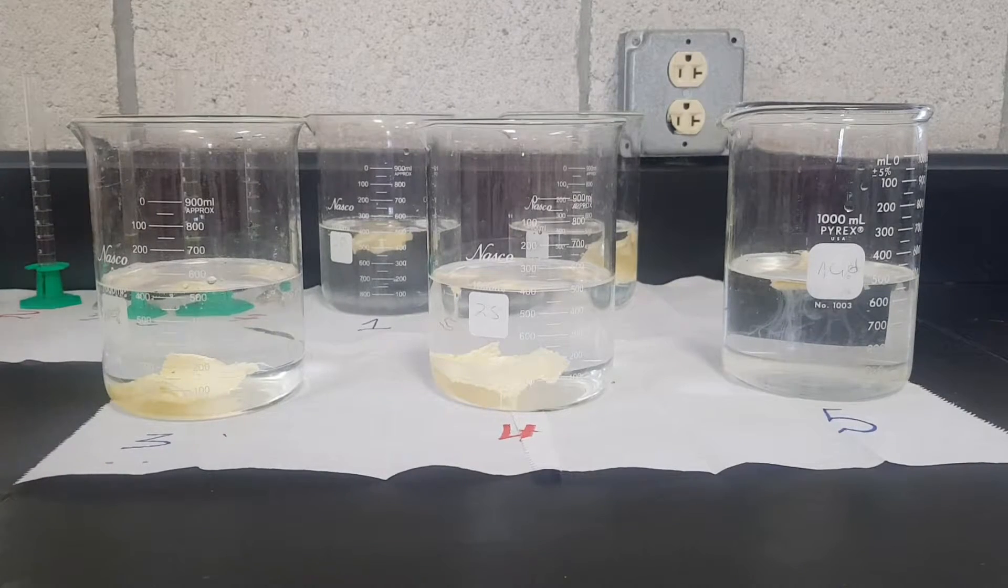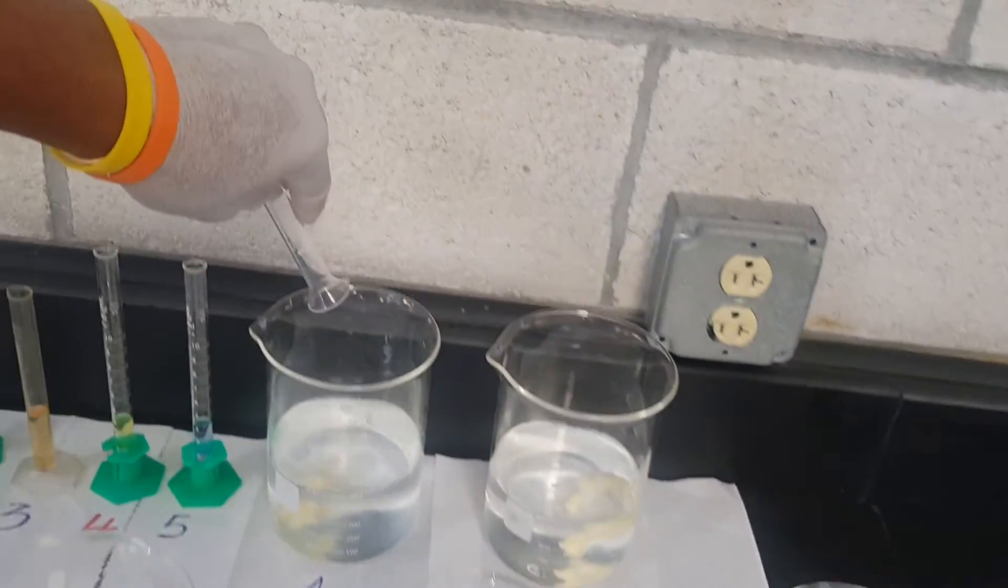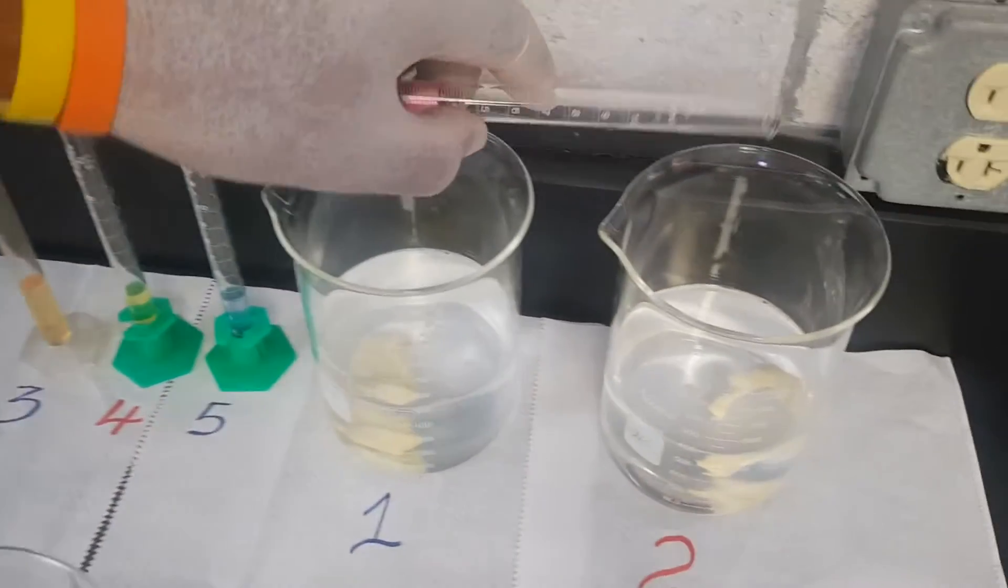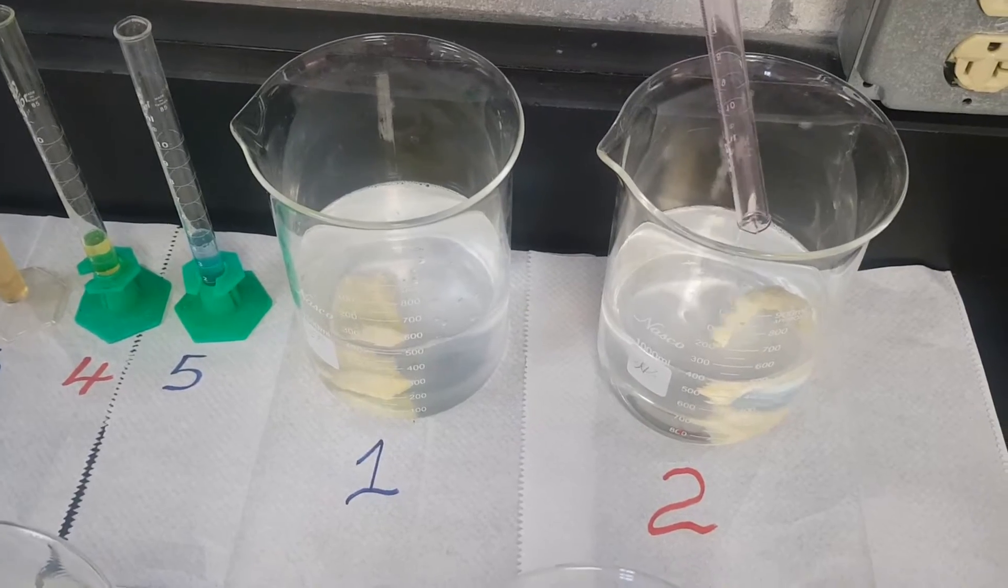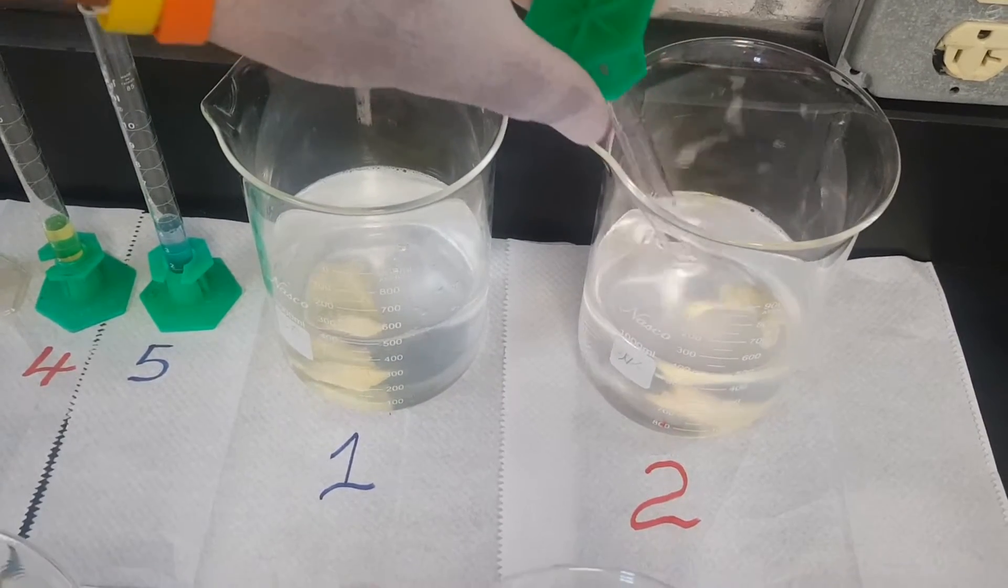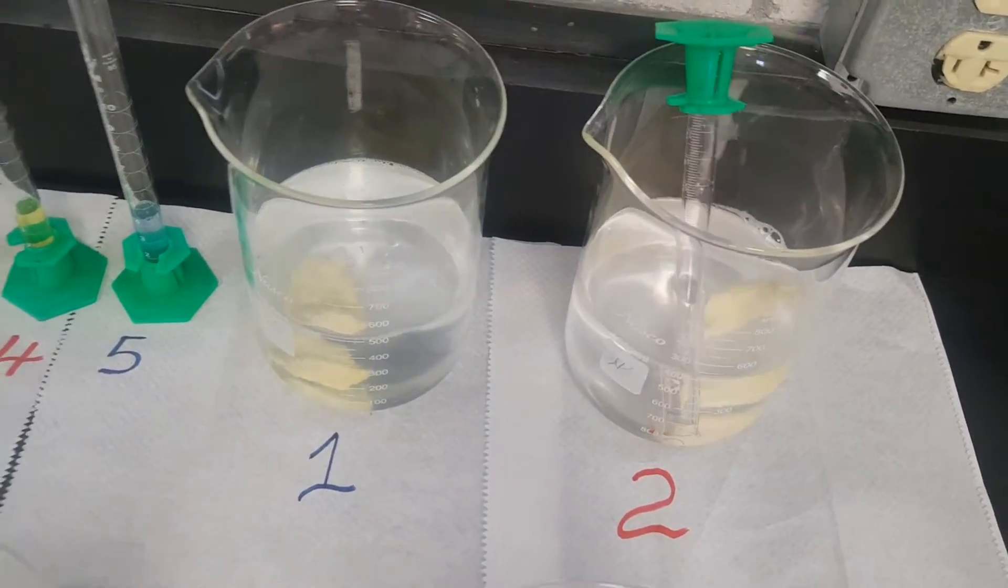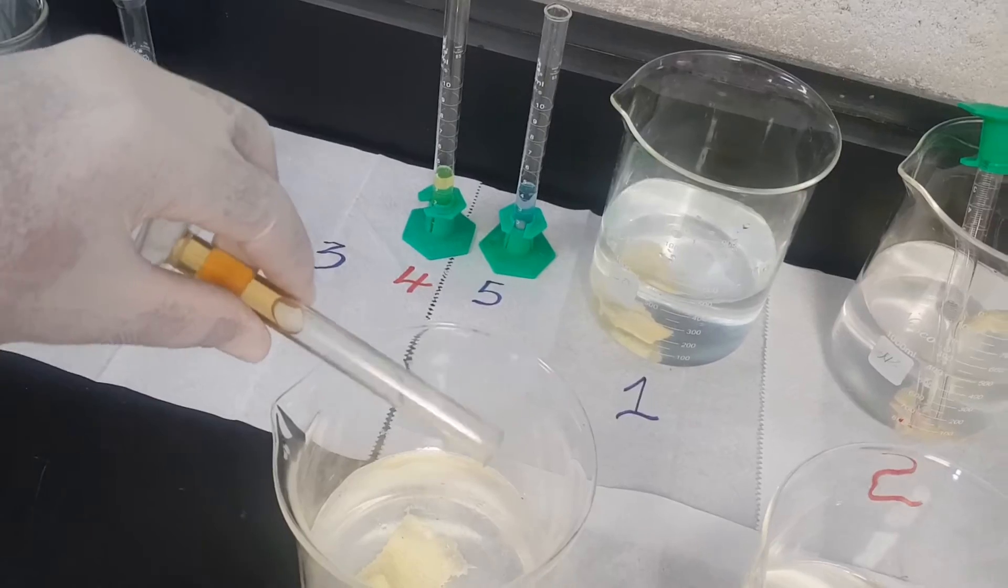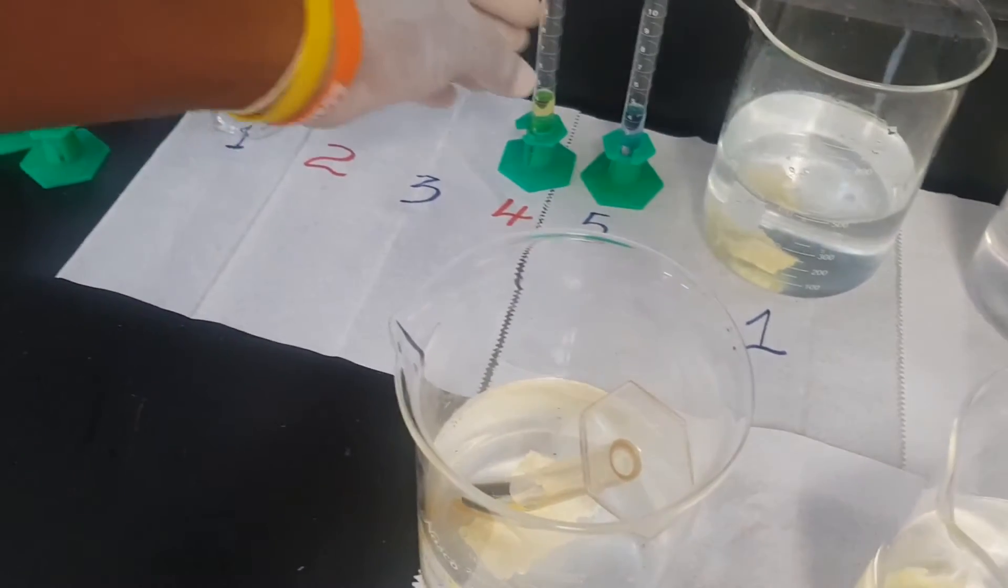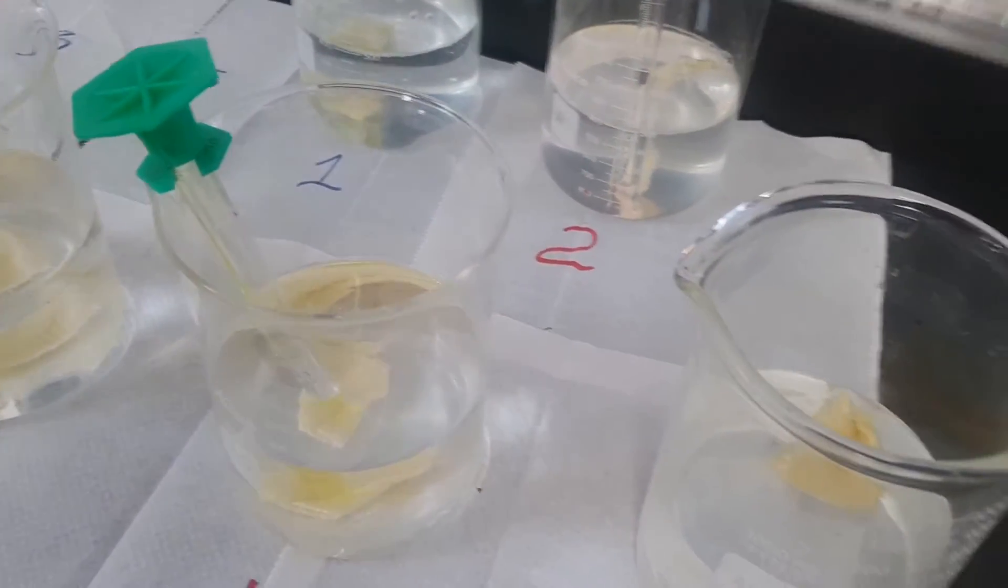Now we're going to put our detergent in, so detergent number one in beaker number one. Detergent number two. You can just leave it hanging to make sure all of the detergent is actually out. Detergent number three. Detergent number four. Detergent number five.